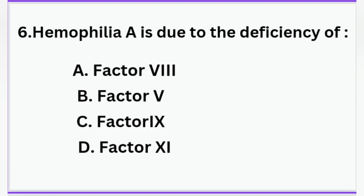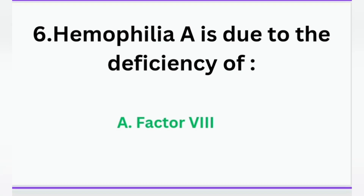Question 1: Haemophilia A is due to the deficiency of which factor? Option A: Factor 8, Option B: Factor 5, Option C: Factor 9, Option D: Factor 11. The correct answer is Option A — Factor 8.